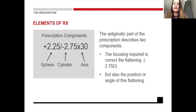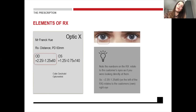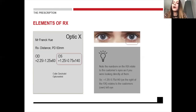The astigmatism part of the prescription describes two components: the cylinder power — for example minus 2.75 — is the focusing power required to correct the flattening, and the 30 degrees is the angle or axis. When you receive a prescription in your practice, it will usually have the practice name, the patient's name, whether it's a distance, near, or intermediate prescription, and the PD — the pupillary distance. Take note that in practice, the prescription written on your left-hand side is usually the patient's right eye, and the OS on your right-hand side is the patient's left eye — it's like a mirror image.